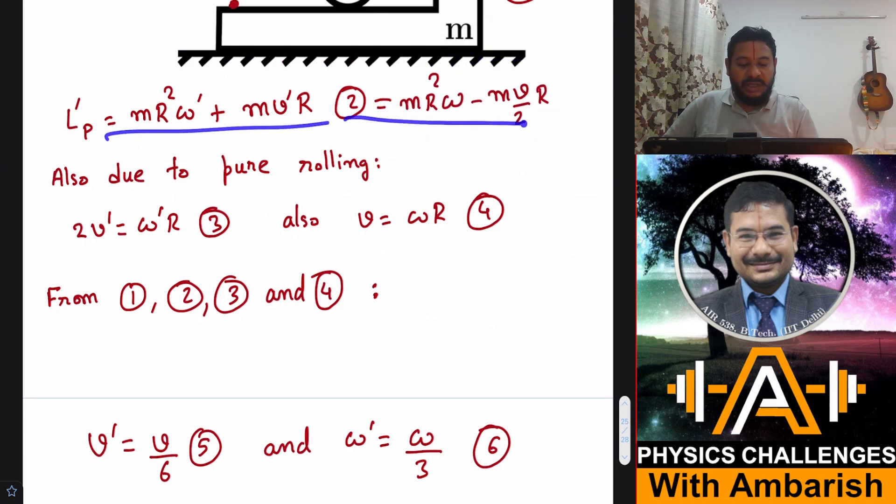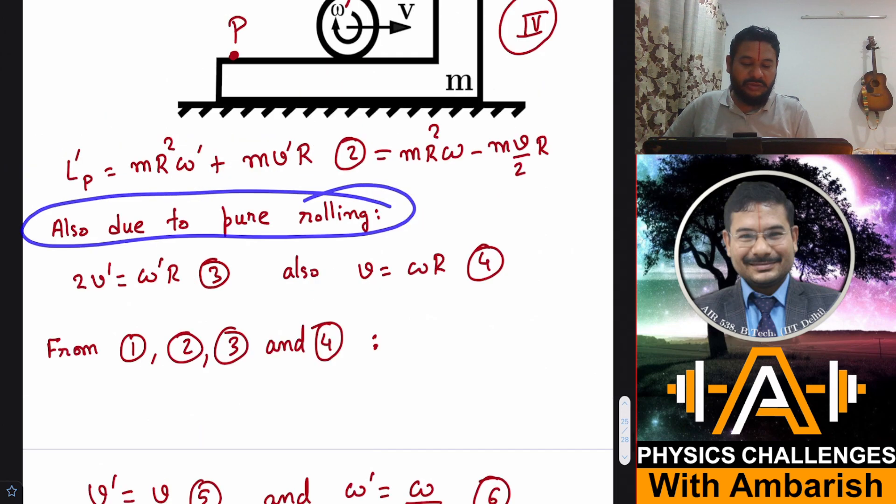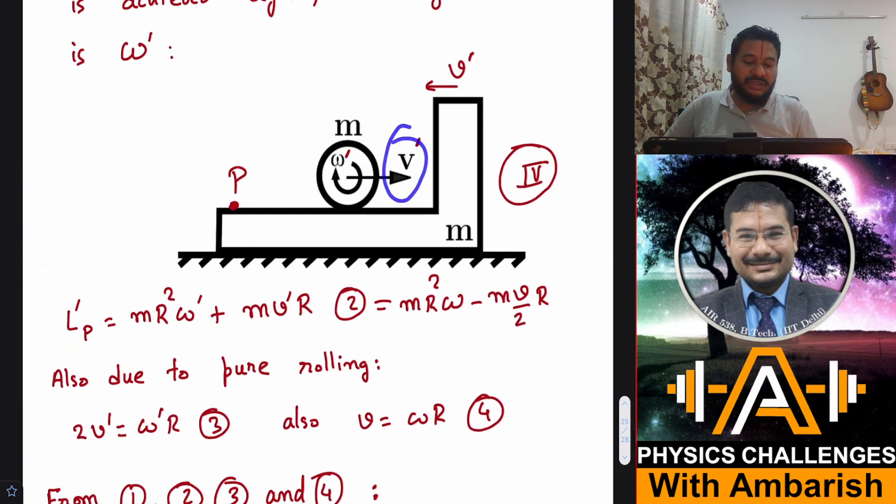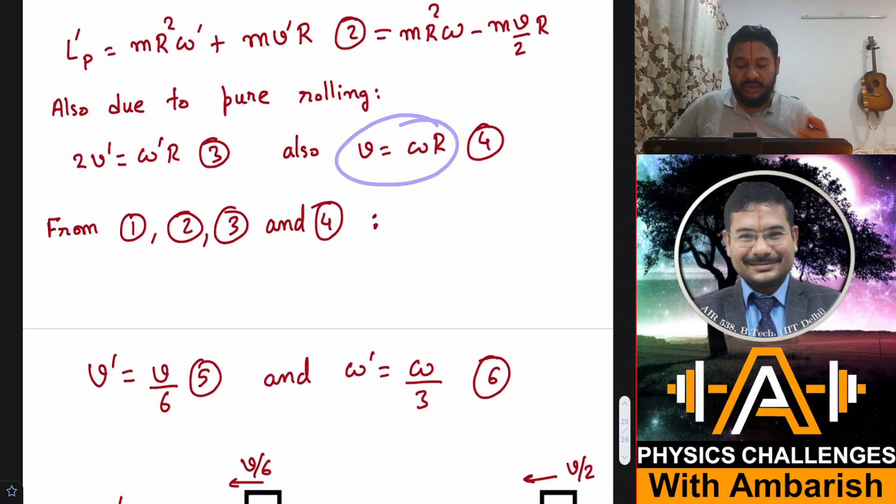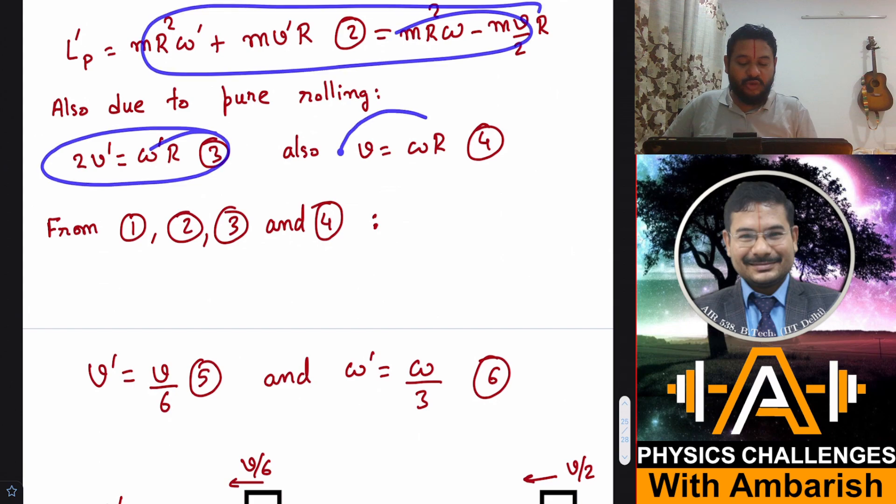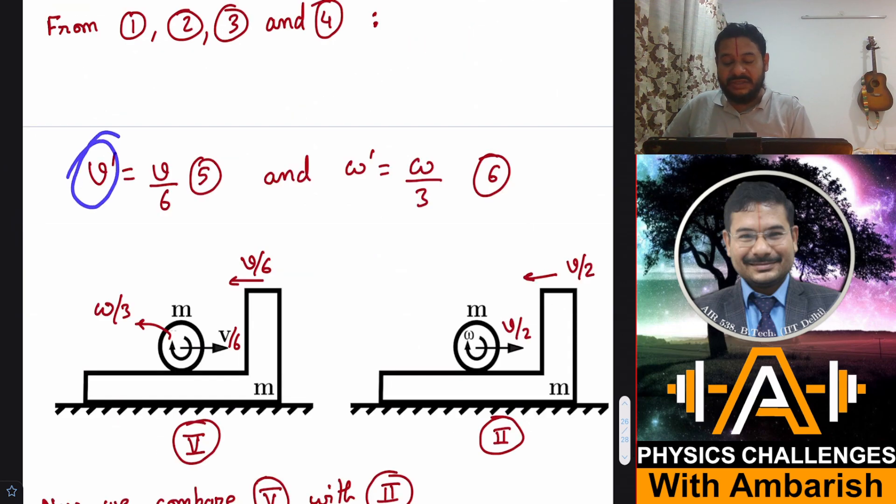So these two are equal. Now, also because of pure rolling, you know that relative velocity is equal to ωR, right? So relative velocity, this is v', this is v', so relative velocity is 2v'. So 2v' should be equal to ω'R. And also originally the system was in pure rolling, so v was also equal to ωR. Now I just need to solve this equation, this one, and v equals ωR. If I solve that, if you solve the system of equations, what do you get? You get v' is equal to v/6 and ω' you get as ω/3. Since I got this as positive, therefore it's in the same direction as the direction I assumed.